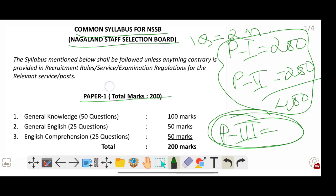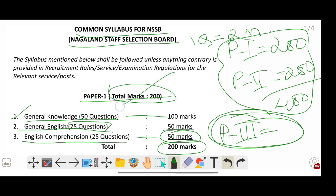Let's look at Paper 1. Total 200 marks. The first subject is General Knowledge, 50 questions, 100 marks. Second is General English, 25 questions, 50 marks. English Comprehension, 25 questions, 50 marks. Total 200 marks. In the later part of the video I will be explaining in detail the syllabus and topics under these subjects, so make sure you watch this video till the end.